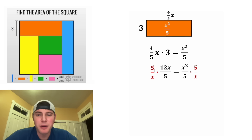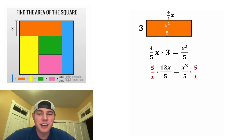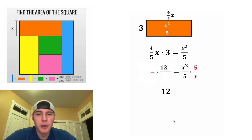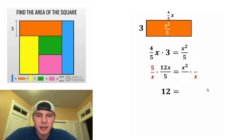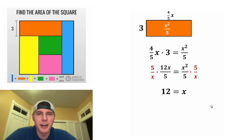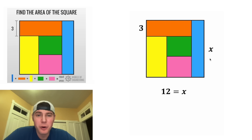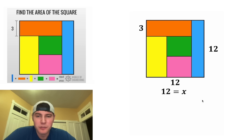Next, we can multiply both sides by five over X. We're allowed to divide by X because X is not equal to zero. On the left-hand side, the two fives cancel and the two Xs cancel, leaving just 12. On the right-hand side, the two fives cancel, and X squared over X is just X. So now we know that 12 is equal to X.